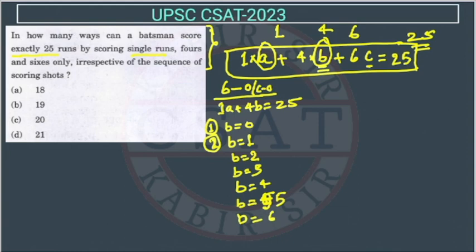Can b be 7? b cannot be 7, because then the run will become 28. So this is the only possibility. So how many possibilities are there? 1, 2, 3, 4, 5, 6 and 7. So this is the first case.